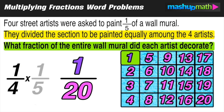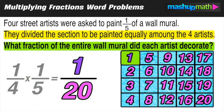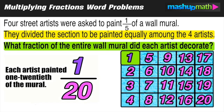When we multiply fractions together, we do numerator times numerator — in this case, 1 times 1, which equals 1 — and then denominator times denominator — in this case, 4 times 5, which equals 20. Our resulting fraction is 1 over 20. So we can conclude that each artist painted 1/20th of the mural.